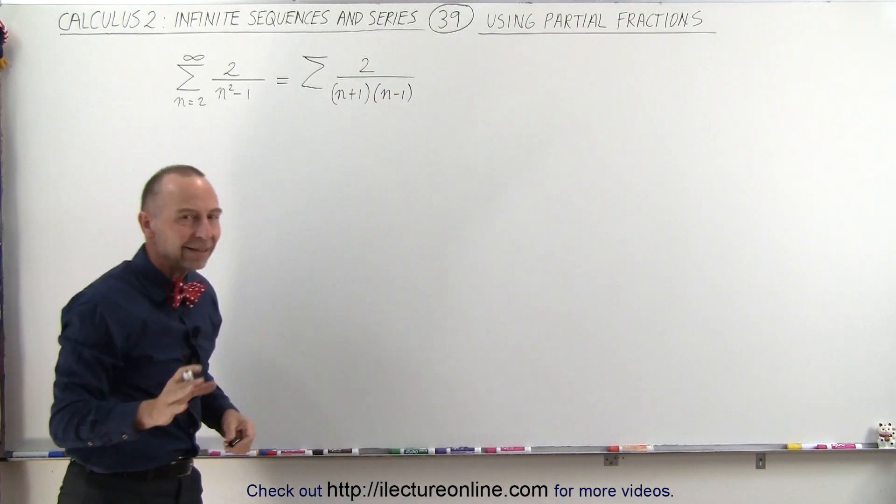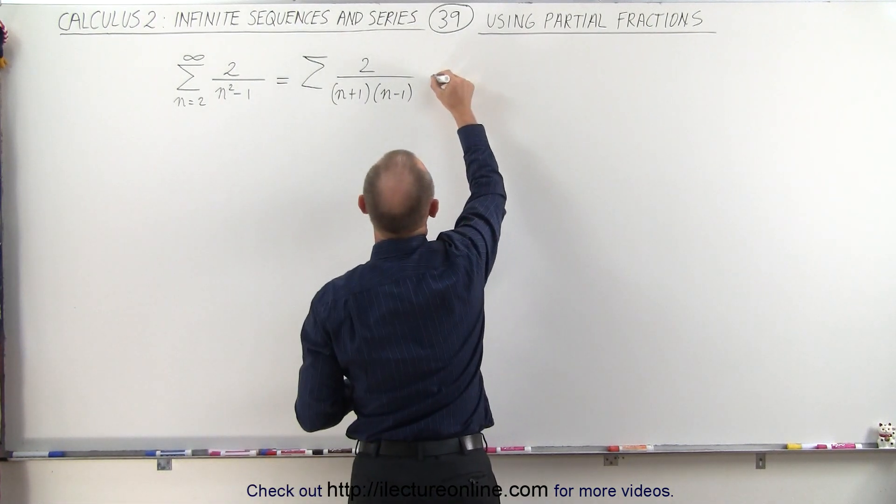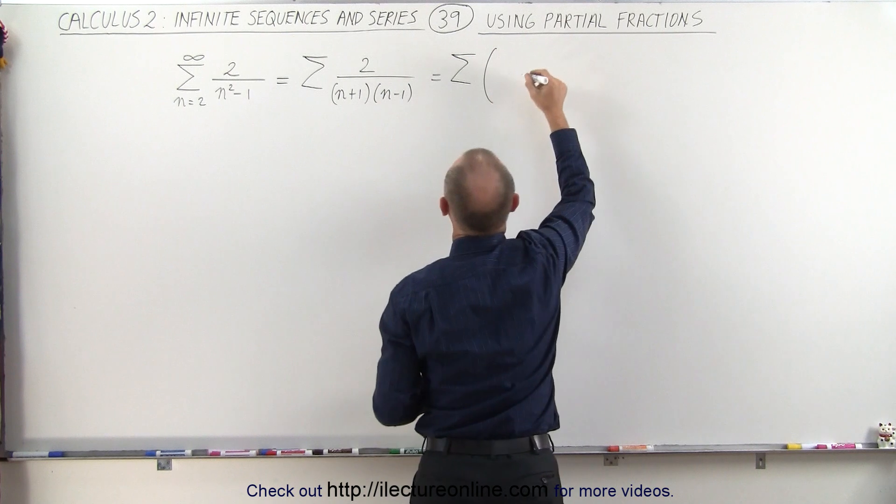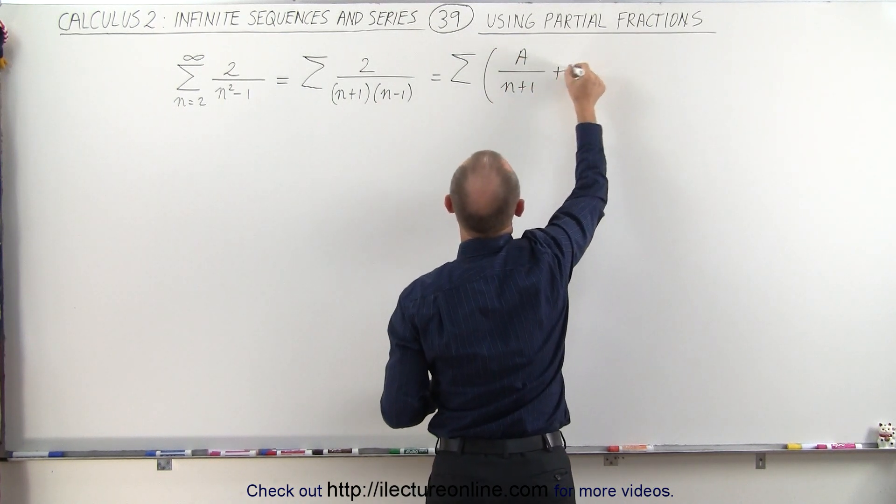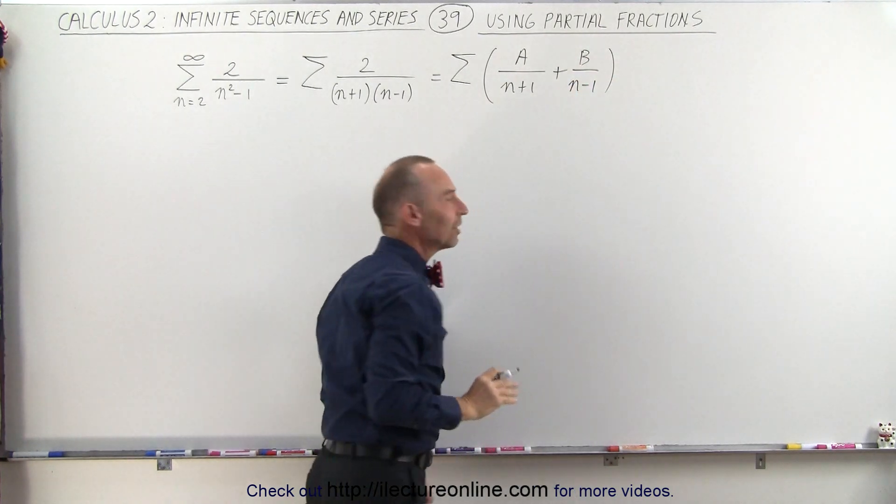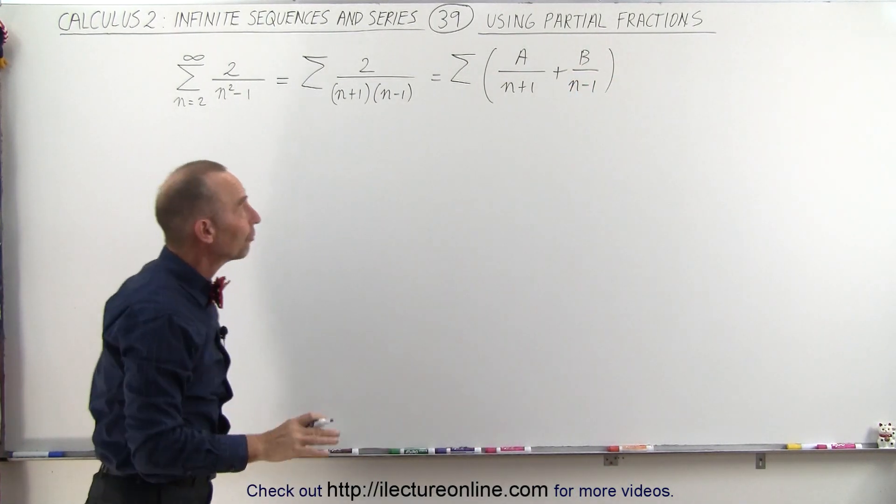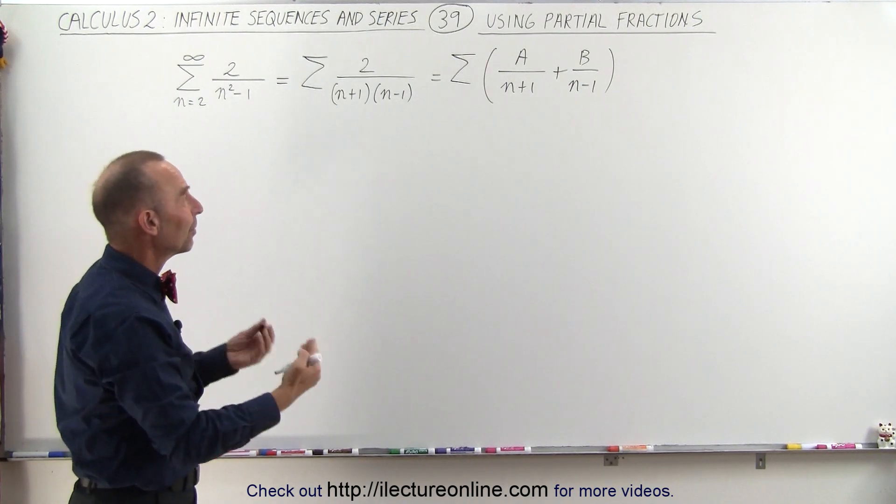And then this lends itself to writing it as two separate fractions. So this can be written as the sum of a divided by n plus 1 plus b divided by n minus 1. And then we use the technique of partial fractions to solve for a and b, and then we can sum up the two infinite series separately.